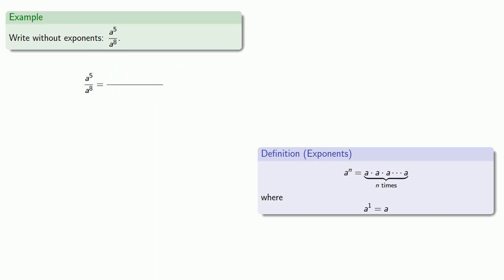So a to the fifth is five copies of a. A to the eighth is eight copies of a. And so when we rewrite it without exponents, we get one over a times a times a. Okay, let's write this with some exponents. This is one over a to power three.